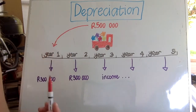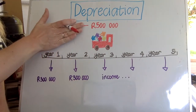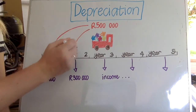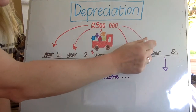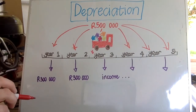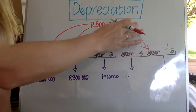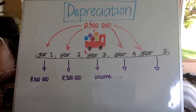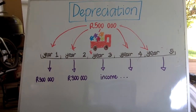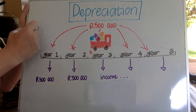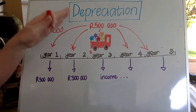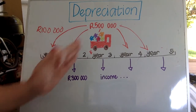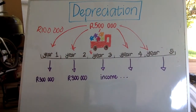Instead of putting that whole 500,000 Rand in year one or not using it at all, you have to split it over all the different years that you think it is going to survive and be used and be able to generate your income. It's only five years that we are using here. So if you were going to depreciate it in a very simple way, you would take off a hundred thousand Rand each year as your expense — a hundred thousand in year one, a hundred thousand in year two, and so on all the way until your vehicle is worth nothing.